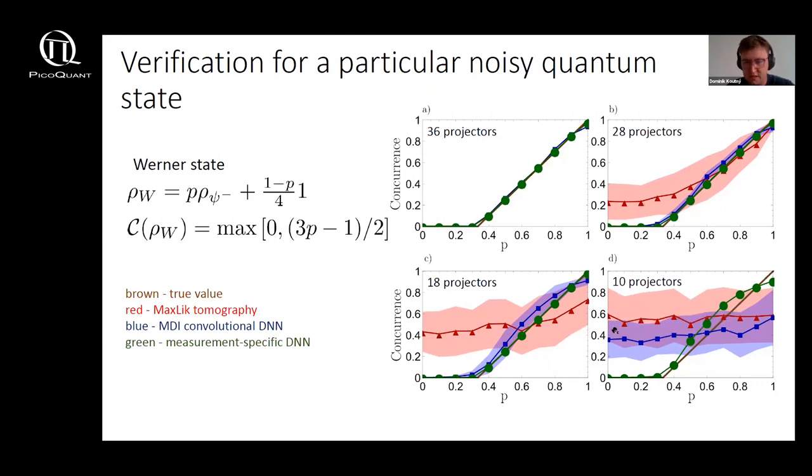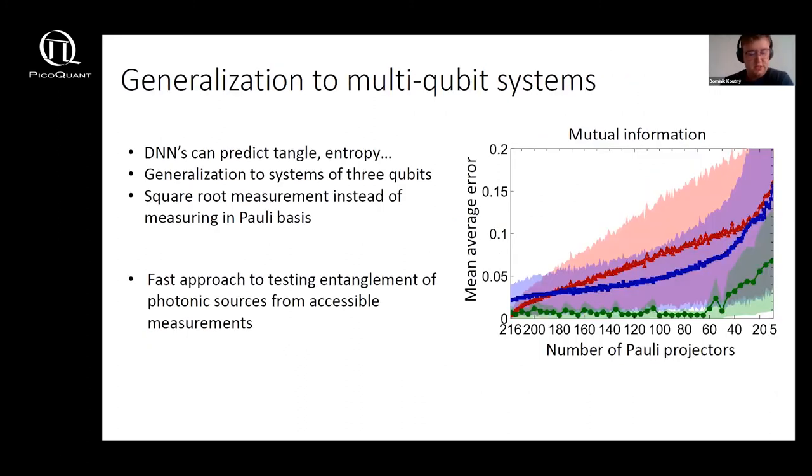And what's very interesting to me is that the measurement specific deep neural network which works only with 10 projectors will not overestimate the value of concurrence in the region when there is no entanglement present in the system, whereas the maximum likelihood approach tends to give us quantum states corresponding to your data that are entangled even though the true state is separable.